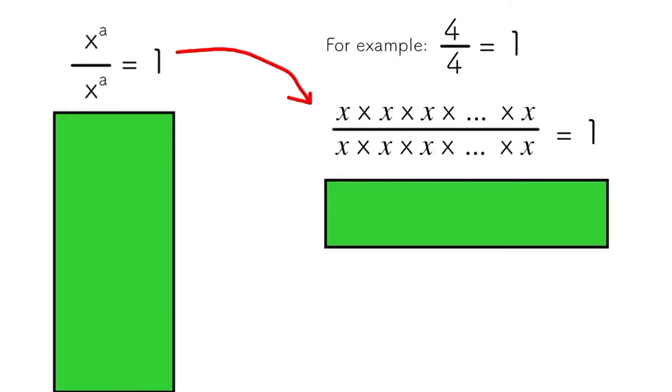More specifically, if I take x to the power of a and I represent it in this way, x times x times x times x, a times, and I divide it by itself, I know that I can cross out pairs of x's because x divided by x should be one, and I know that from the example above.